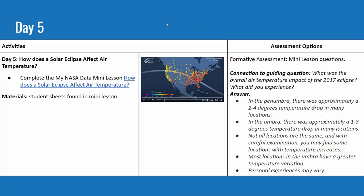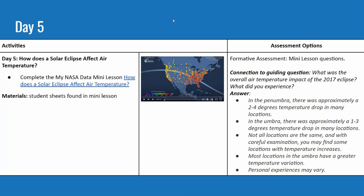On day five, students look at an animation of eclipse data from the GLOBE Observer Eclipse Tool from 2017. They answer questions about what happened, and if they observed the eclipse in 2024, they can compare. The connection to the guiding question is what was the overall air temperature impact of the 2017 eclipse, and there are detailed notes provided for answers.